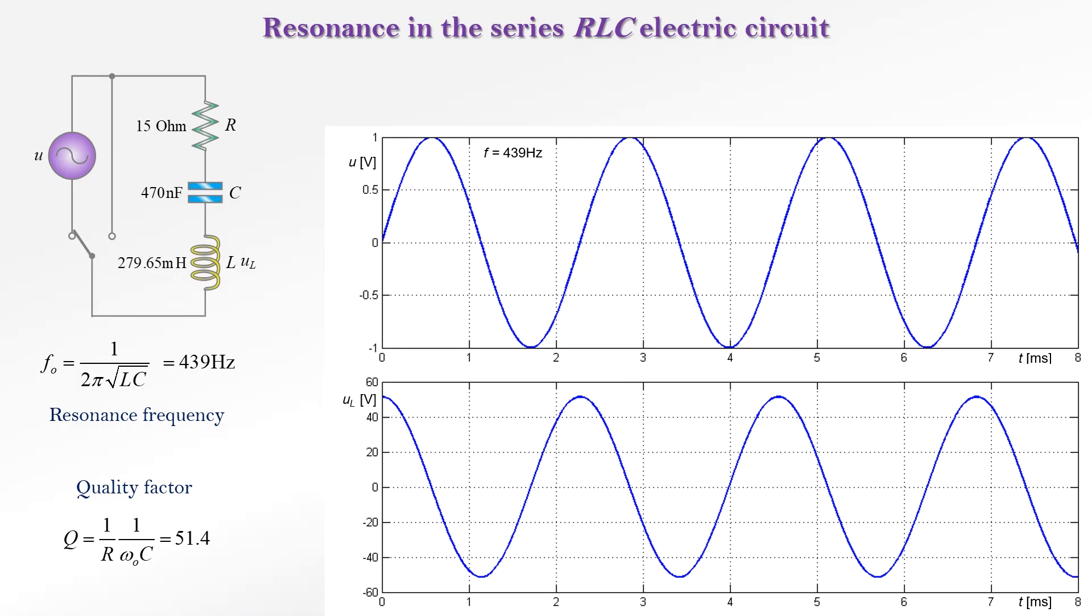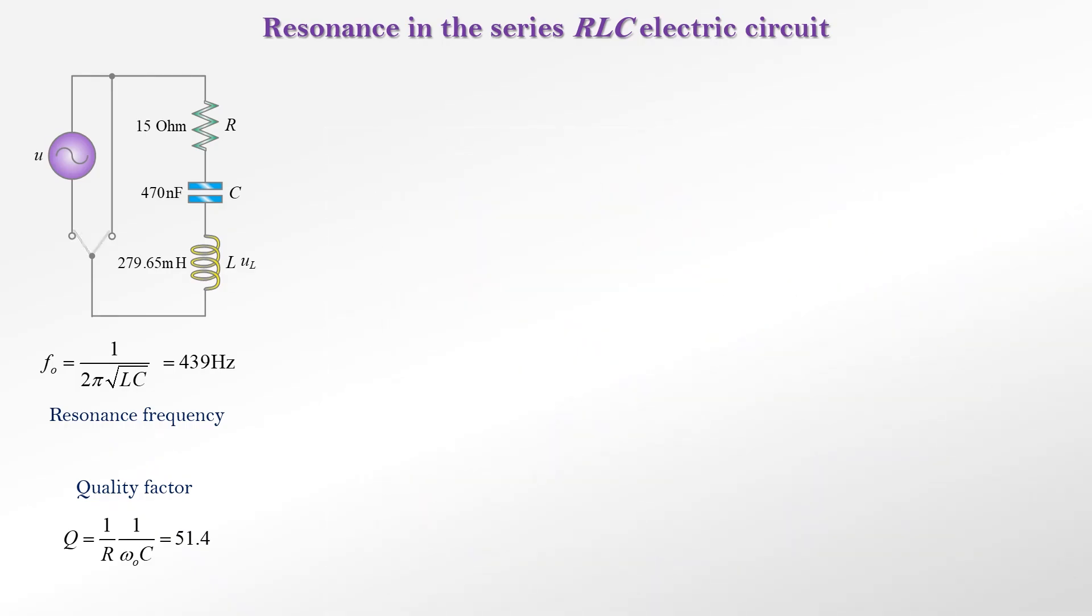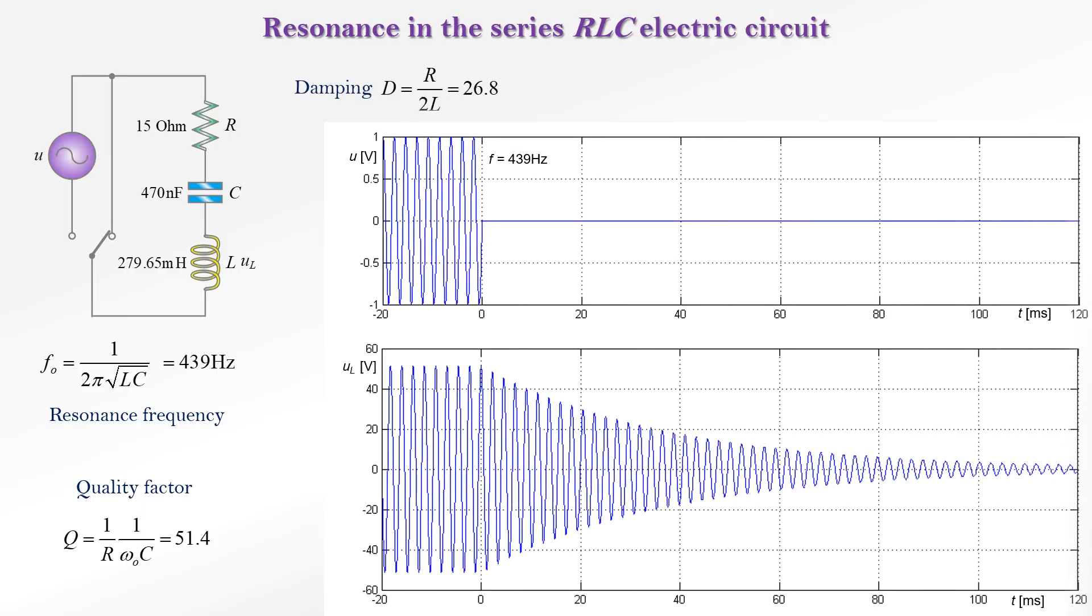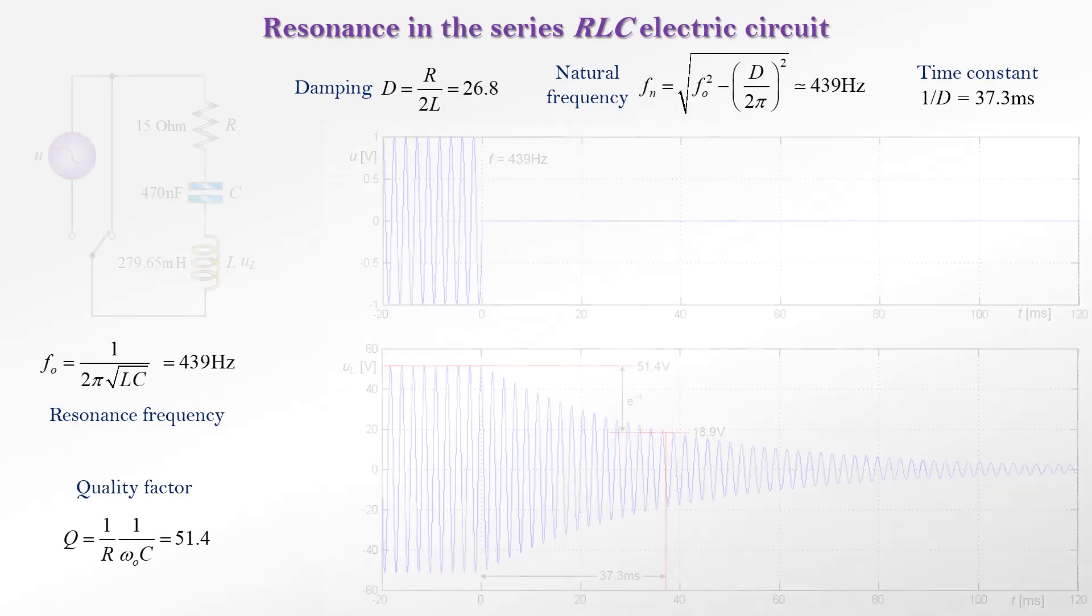When the source is turned off, the circuit vibrates at its own frequency, which is called the natural frequency. The oscillations decrease exponentially with a time constant of 37.3 milliseconds and disappear in about five time constants.